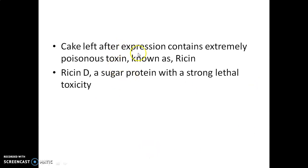After collecting the oil, the cake left after expression contains an extremely poisonous toxin — ricin D, a sugar protein (glycoprotein) which is lethal and toxic. When injected into the body or systemic circulation, the body produces an antitoxin anti-ricin, and the resulting antigen-antibody reaction is very lethal. Ricin D is one such ricin — a sugar protein with strong lethal toxicity present in the kernel of the castor oil bean, and it is removed by steaming following the cold expression process.